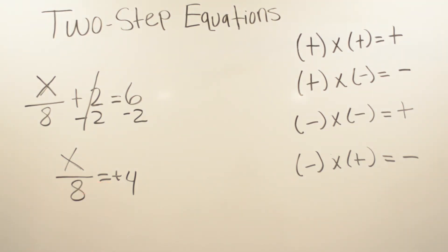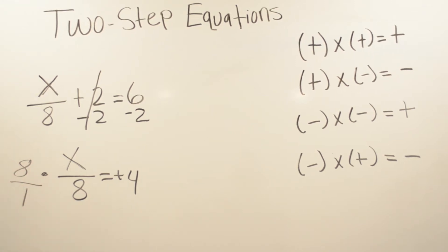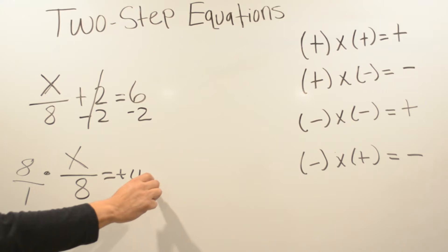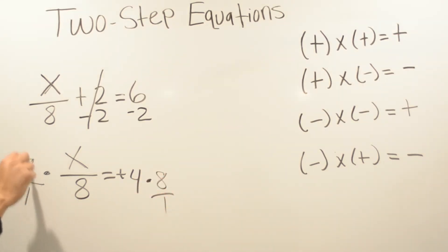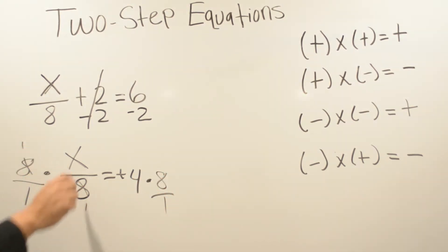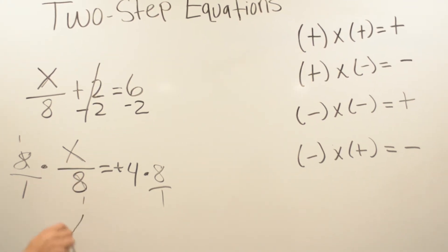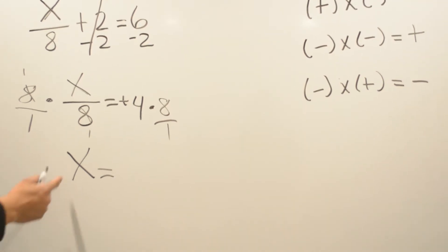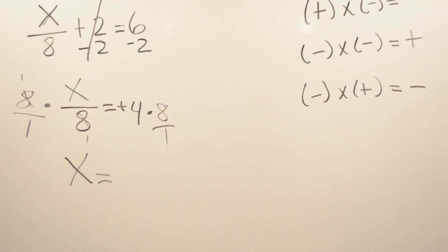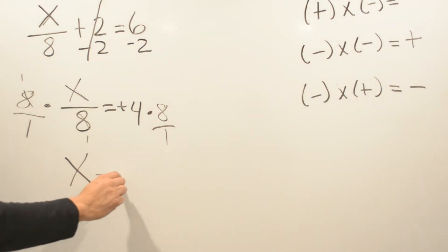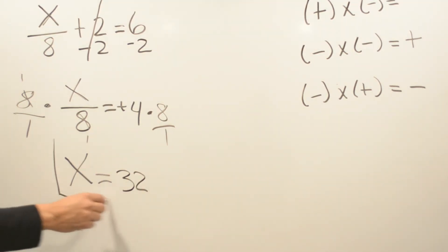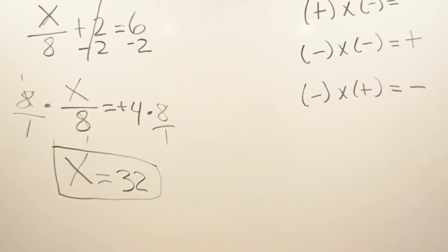So now we have x over eight equals positive four. When you have division, to get rid of division you have to multiply by eight over one. Whatever we do on one side of the equal sign, we have to do it on the other side. This will cross out, leaving the variable x by itself — which is always the goal. So we do eight times four, which is going to be 32. So your answer for this problem is x equals 32.